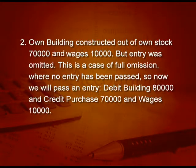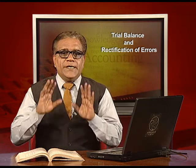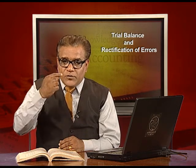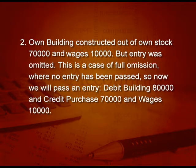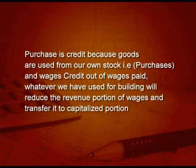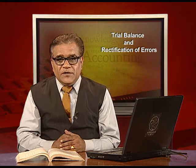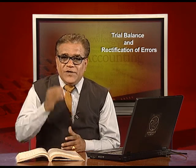Next: own building constructed out of own stock 70,000 and wages 10,000, and this entry was omitted — not recorded at all. We are constructing a building from our own stock and paid wages of 10,000. This is a case of full omission where no entry has been passed. So now we will pass an entry: debit building 80,000 and credit purchases 70,000 and wages 10,000. Purchases are credited because goods are used from our own stock, and wages are credited because they were debited when paid and are now being utilized in the building, so wages account will come down.